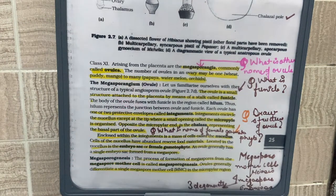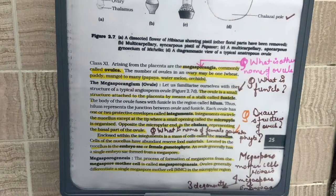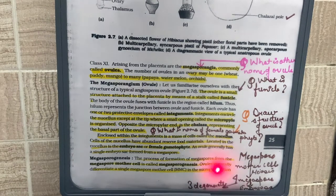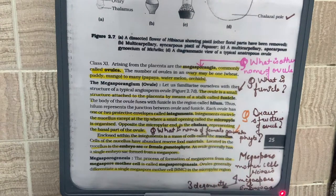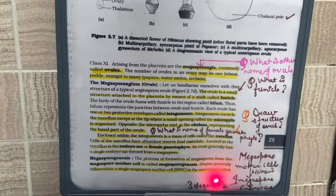This process of formation of four megaspores by meiosis in the megaspore mother cell is known as megasporogenesis. Unlike microsporogenesis, in megasporogenesis out of the four megaspores produced, three degenerate and only one is left, which develops into the embryo sac.